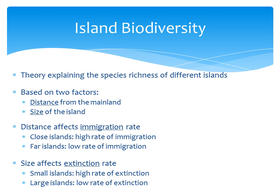Distance is important because it affects the immigration rate. Immigration is the number of new species arriving on the island. Islands that are close to the mainland will have a high rate of immigration, because more species can get there from the mainland, whether by flying, or swimming, or even catching a ride on a raft of some kind. Islands that are far from the mainland will have a low immigration rate, because it's difficult for new species to get there.